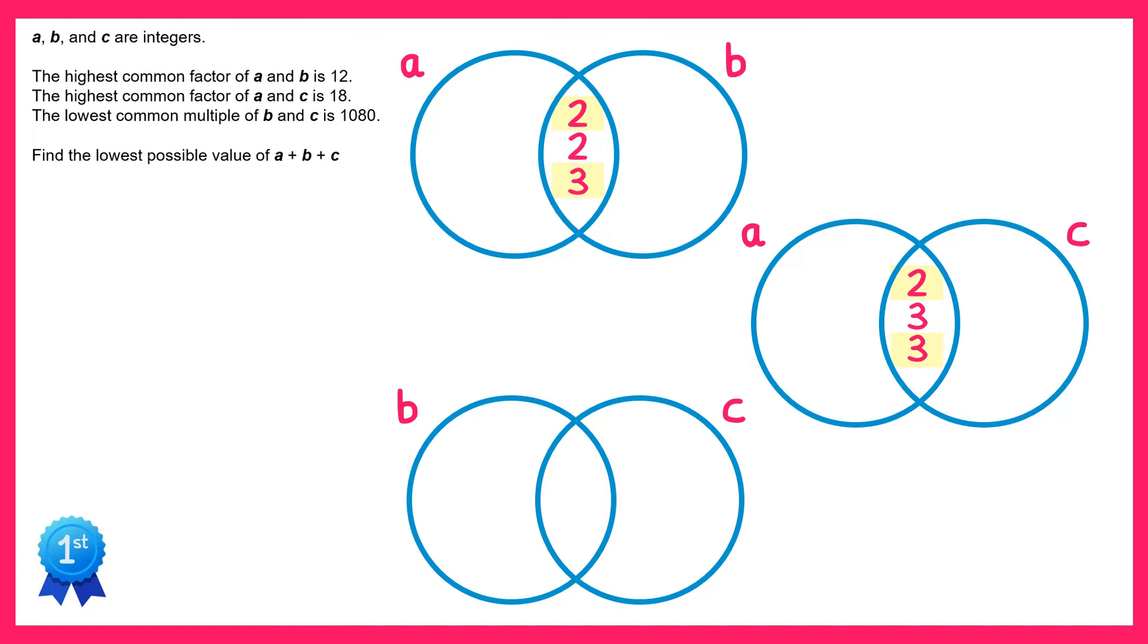So both 2 and 3 are factors of B and they're factors of C, therefore they must be in the intersection of B and C. So we can put one 2 and one 3 in here.